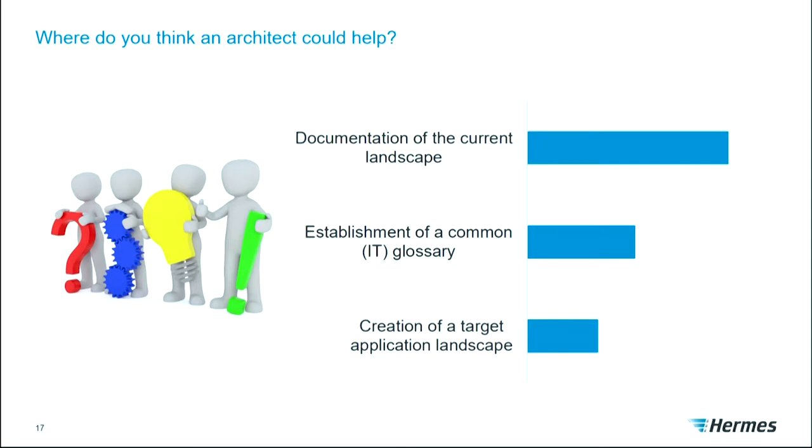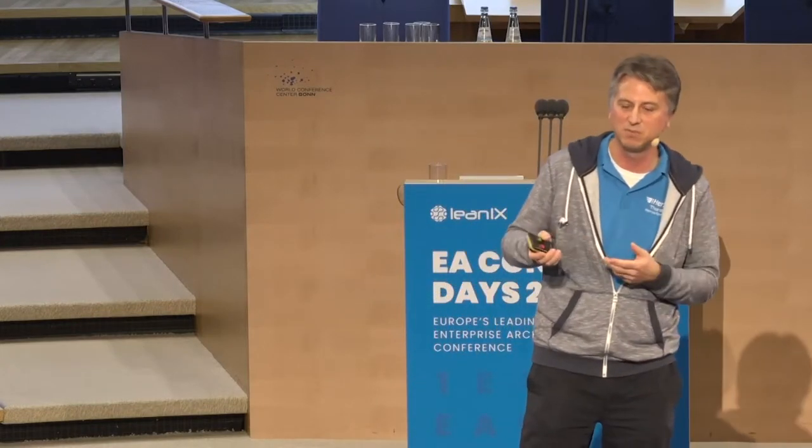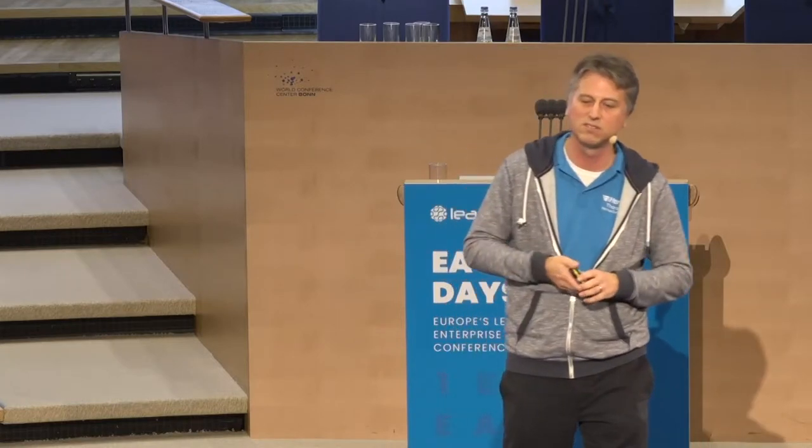Sometimes the results were surprising. The first question was: what do you think an architect could help you with? The most-voted answer was not creating fancy new strategies or modern stuff, but: document the current landscape. We have no holistic view — we have some documentation in Visio, PowerPoint, whatever — but we need a current view as a starting point for new projects. The second was to establish a common IT glossary, so we have a common language on IT level. The third was to create a target landscape.